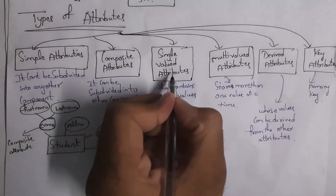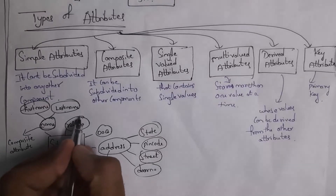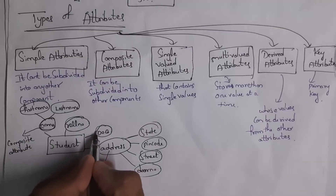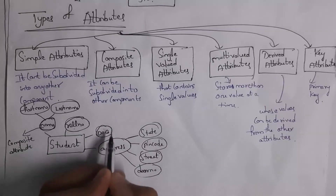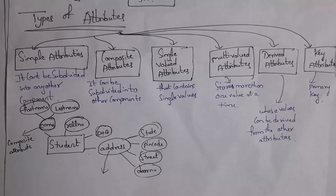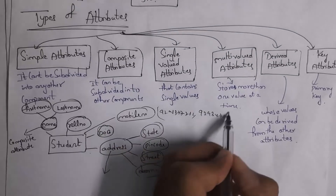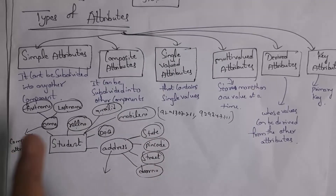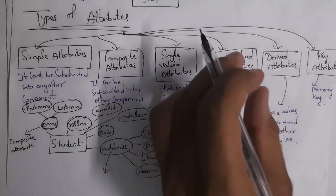An attribute that contains only single values is known as a single valued attribute. For example, roll number — we can give only one roll number to a particular student. Date of birth is also a single valued attribute. An attribute that contains multiple values is known as a multi-valued attribute. For example, mobile number — we can give multiple mobile numbers. Gmail ID is also a multi-valued attribute because one student can have multiple Gmail IDs.